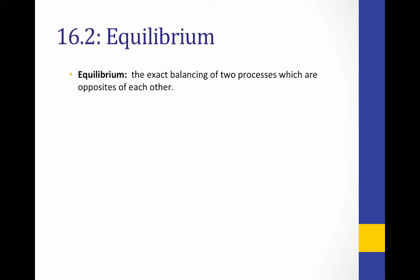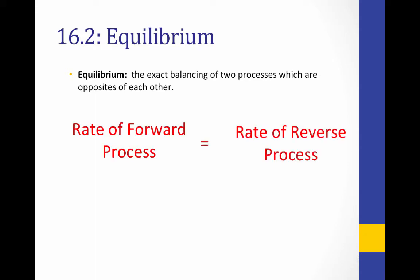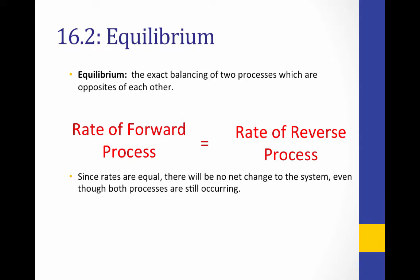Equilibrium refers to the state of a system when there is an exact balancing of two processes which are opposite of each other. In other words, the rate of the forward process is equal to the rate of the reverse process. Because the rates of these opposite processes are equal, there will be no net change to the system, even though both processes are still occurring.